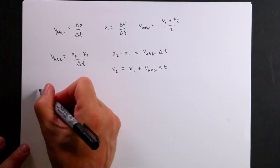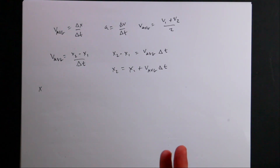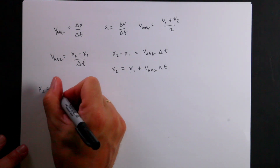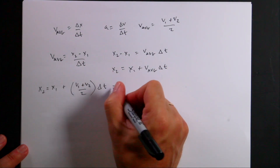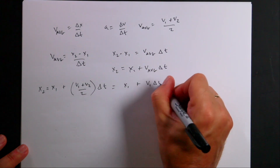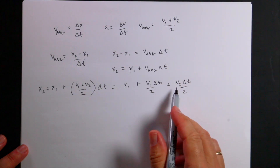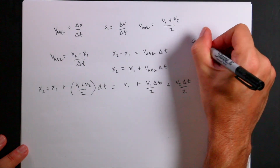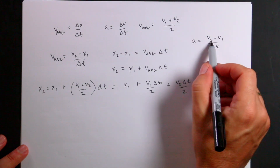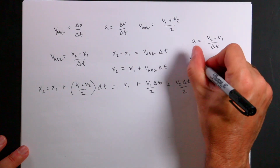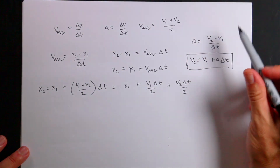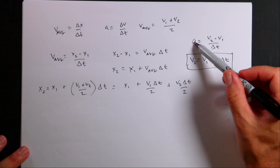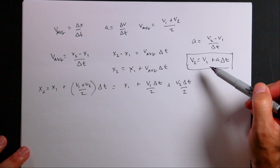Now I'll substitute V average with V1 plus V2 over 2, so X2 equals X1 plus V1 plus V2 over 2 times delta T. Multiplying that out gives X1 plus V1 delta T over 2 plus V2 delta T over 2. Now from the acceleration definition, A equals V2 minus V1 over delta T. Solving for V2: multiply both sides by delta T and add V1, giving V2 equals V1 plus A delta T. That's actually one of the kinematic equations.